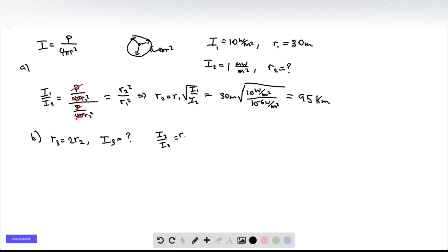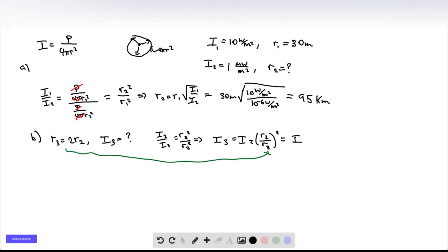So the way we're going to do this is use this same relationship. We're going to say I2 over I3 is equal to R3 squared over R2 squared. And that tells us that I3, if we just simplify the algebra, is I2 times R2 squared over R3 squared. But we can simplify this because we can plug in this over here for R3. It's I2 times R2 over 2R2 squared. These R2s cancel.